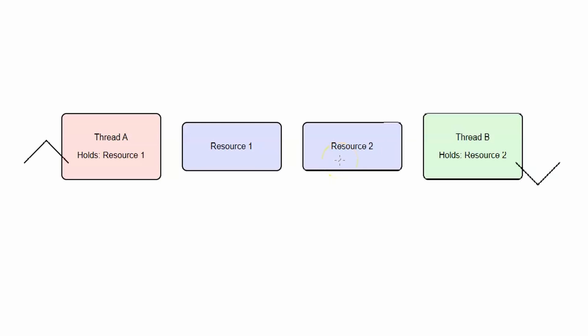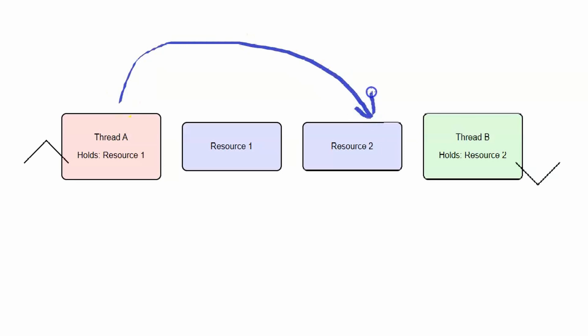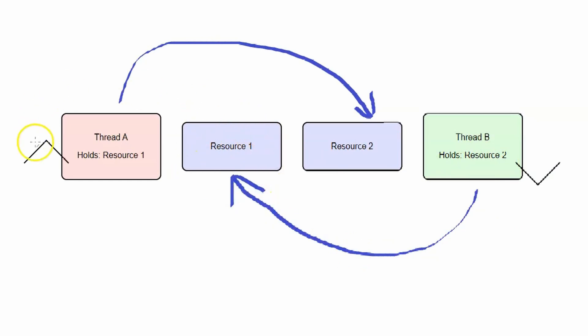Here's a simple demonstration of a deadlock with two threads — Thread A and Thread B. Thread A is holding Resource 1 and Thread B is holding Resource 2. To continue, Thread A needs Resource 2, but Thread B is holding it and won't release it because Thread B is waiting for Resource 1, which Thread A holds. Neither thread can continue since each is holding a resource the other one needs.